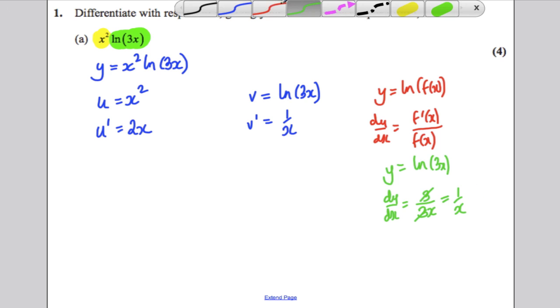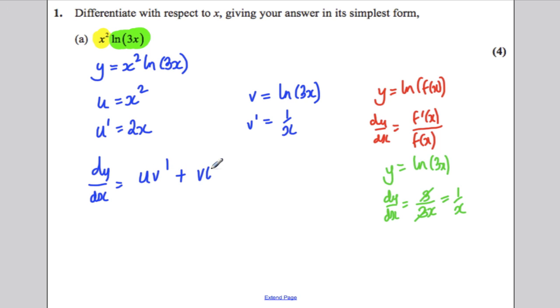Okay, you must lay out your working like this to get the method marks. The mark scheme says that it's best to always quote the rule you're going to use. So you're about to use the product rule. So quote it. dy by dx is uv dash plus vu dash.